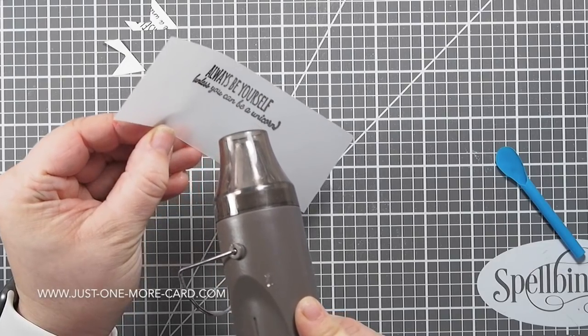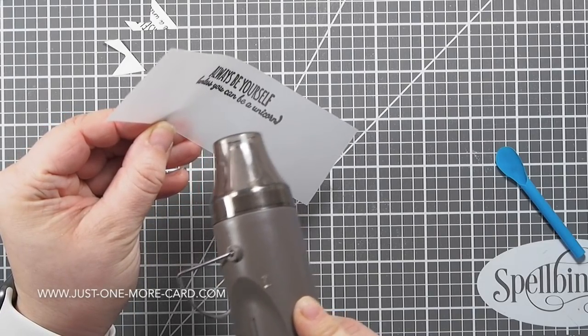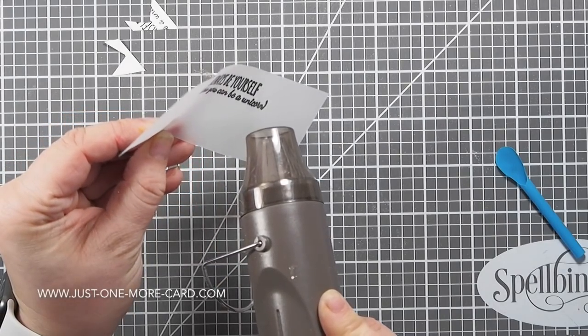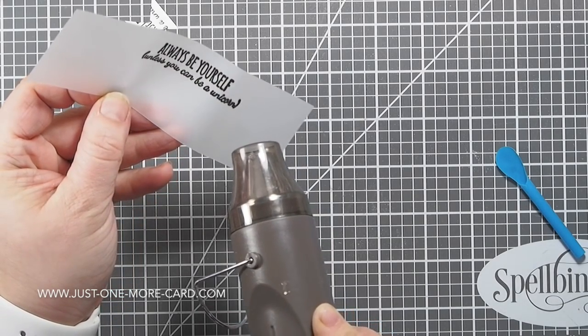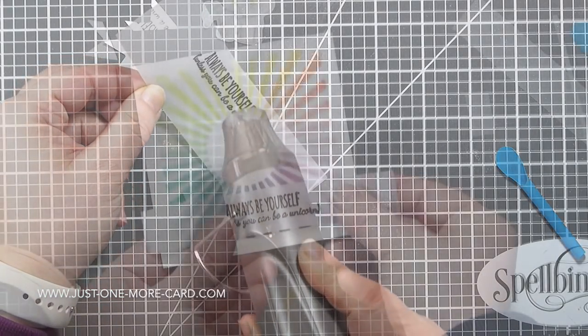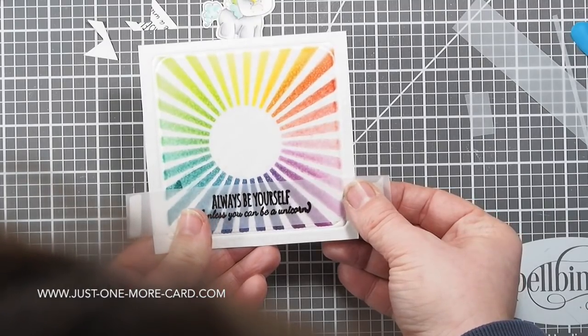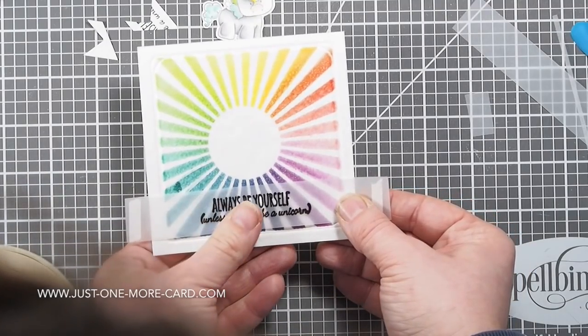I used a powder tool, which will be listed in the video description below, on my block to make sure that the black embossing powder would only stick to the ink, because black embossing powder is always tricky.